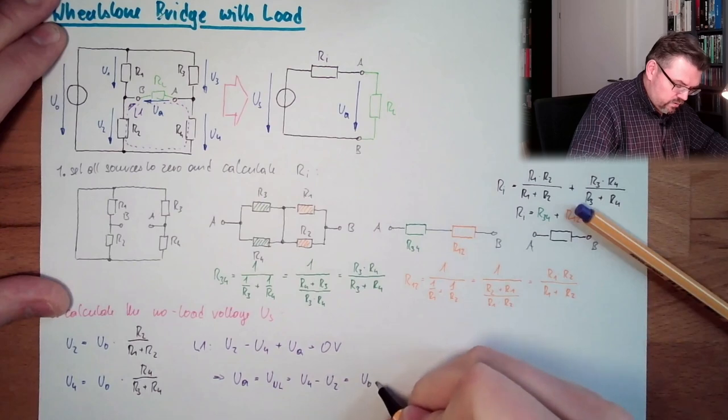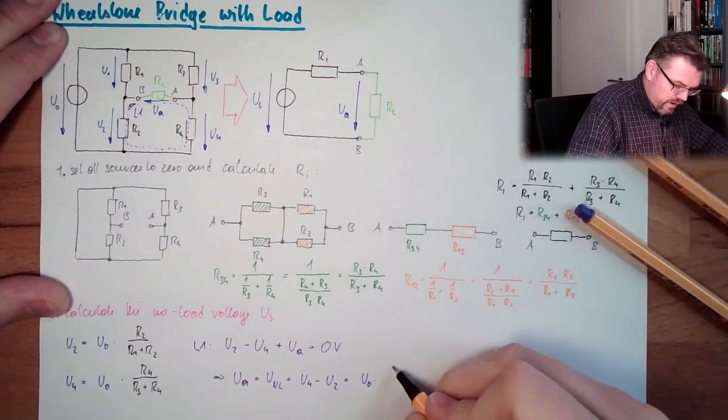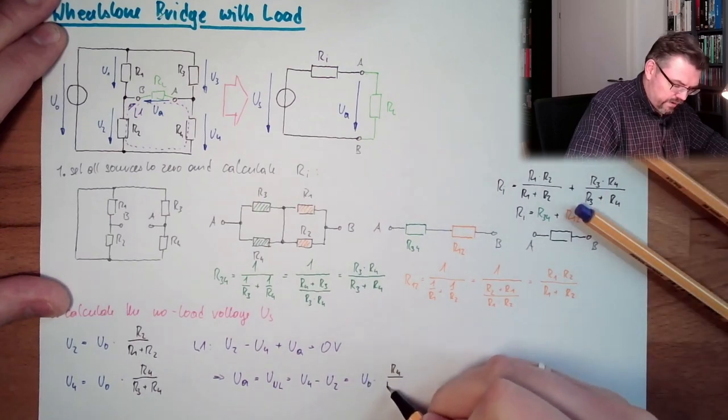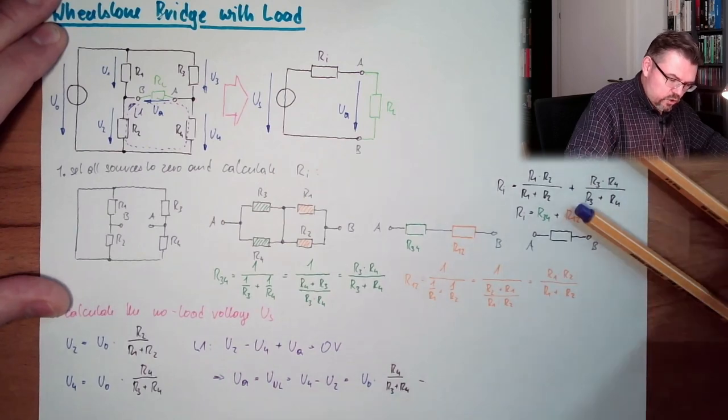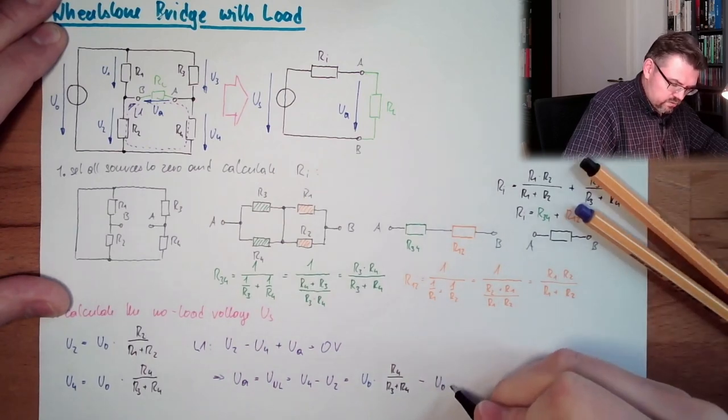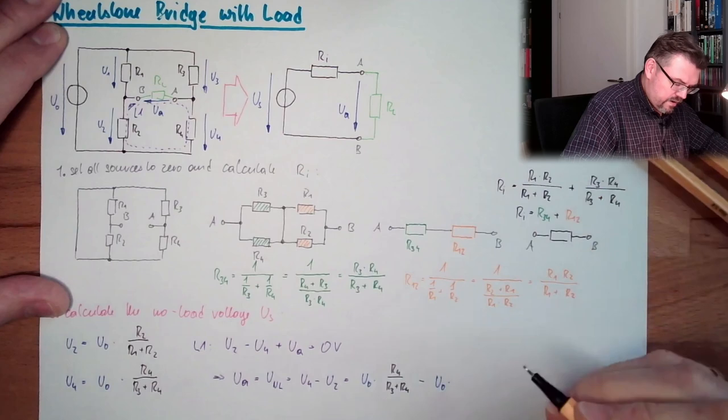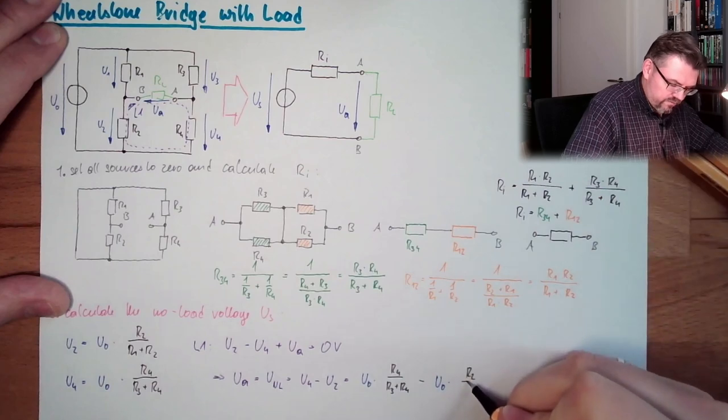So U4 is U0 multiplied by R4 divided by R3 plus R4, and now minus U0 multiplied by R2 divided by R1 plus R2.